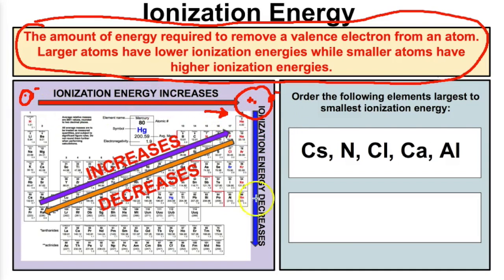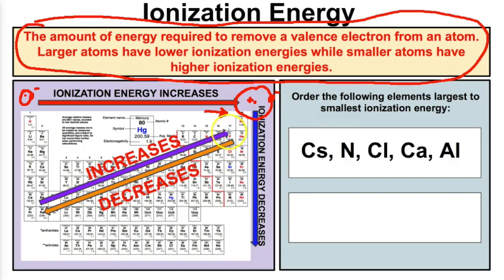As you go down the periodic table, the ionization energy is going to decrease — it's going to take less energy to remove a valence electron as you move down because those atoms are increasing in size. The atoms that have the greatest ionization energy will be in the top right corner, excluding the noble gases since they don't really react with anything. So fluorine is going to have a really high ionization energy, while the bigger atoms down in the bottom left are going to have really low ionization energies.